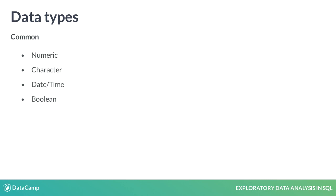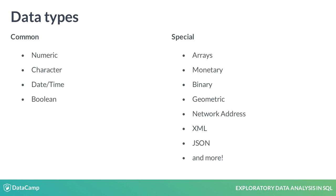These three, along with Boolean — which holds true or false values — are the most common types you'll encounter. But they're not the only ones. There are also special data types to hold monetary values, geometric data like points or lines, and structured data types like XML and JSON. These special types differ more across database implementations than the four common ones.